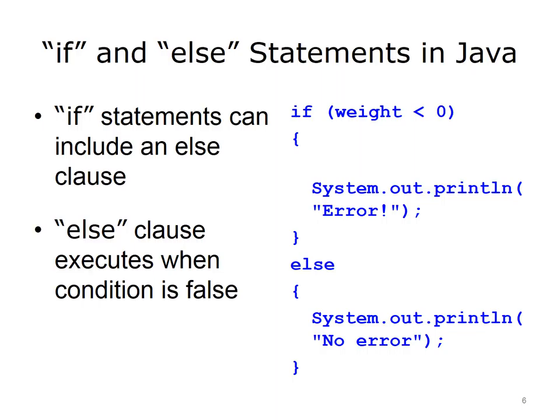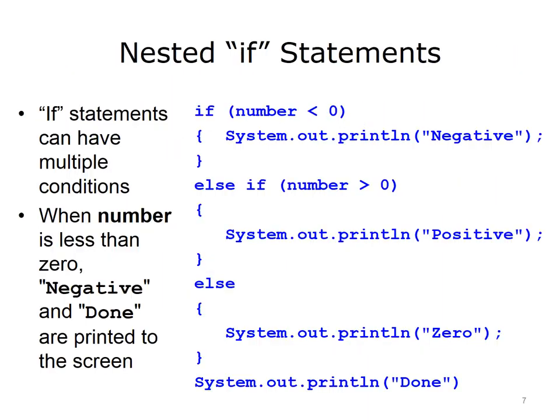When the variable weight is less than zero, the message error will be printed to the screen. When the condition is false and the weight is greater than or equal to zero, the message no error will be printed to the screen. Within the bodies of the if statement and the else clause, there can be multiple statements. It is also possible to build nested if statements where multiple conditions are checked. When a condition evaluates to true, the body of that if statement executes, but the rest of the statements are skipped.